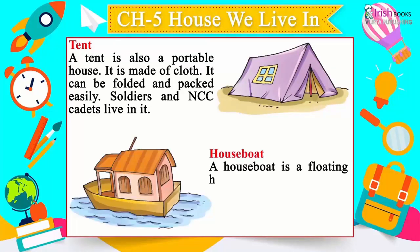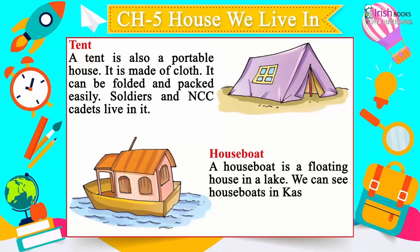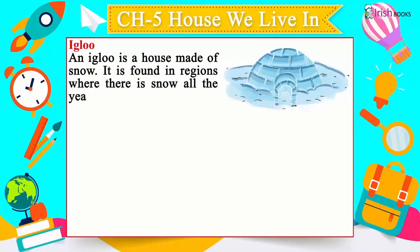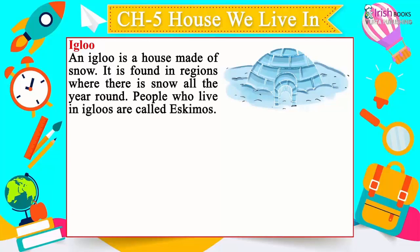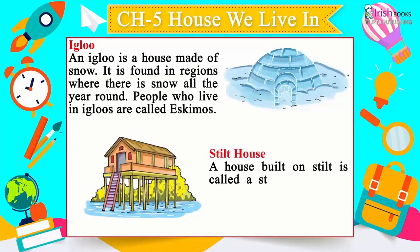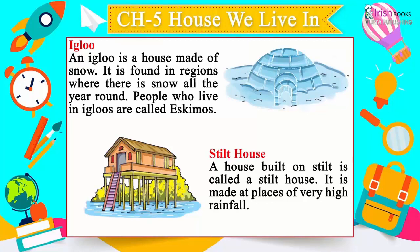A houseboat is a floating house in a lake. We can see houseboats in Kashmir. An igloo is a house made of snow. It is found in regions where there is snow all around. People who live in igloos are called Eskimos. A house built on stilts is called a stilt house. It is made at places of very high rainfall.